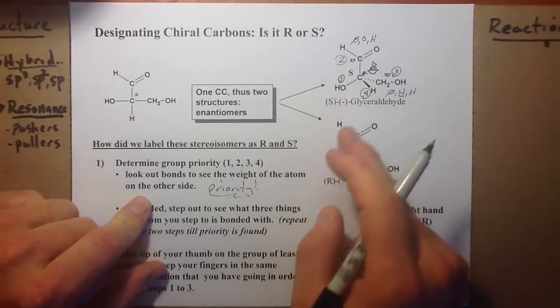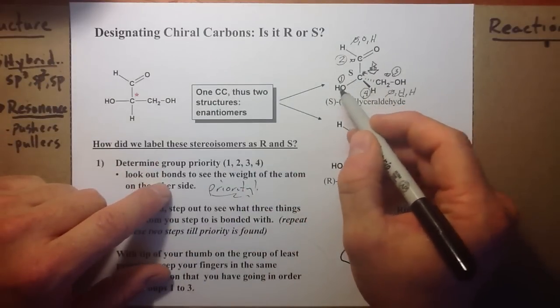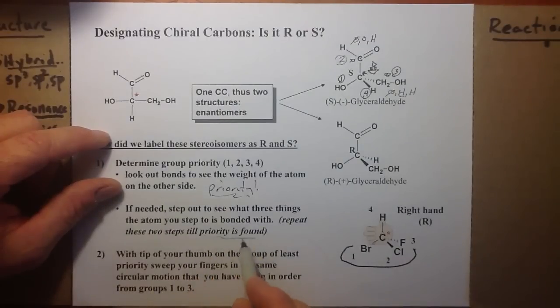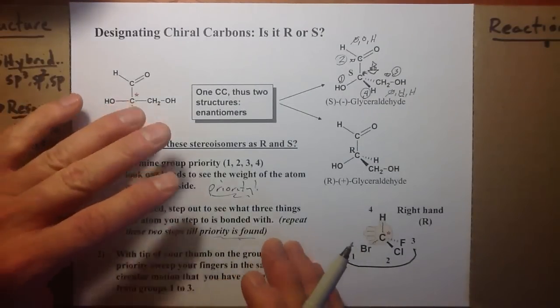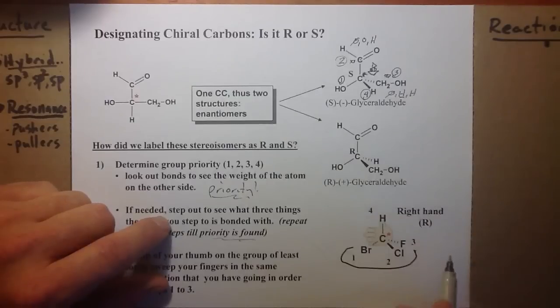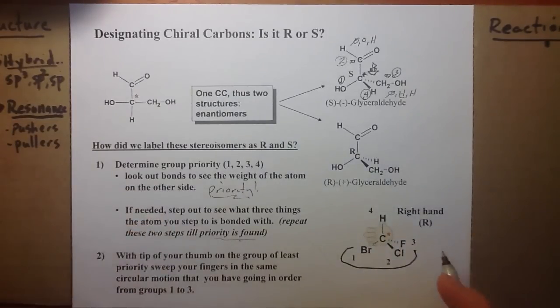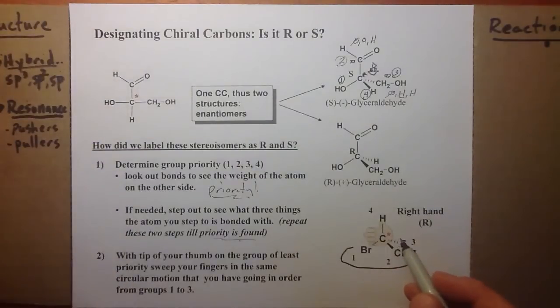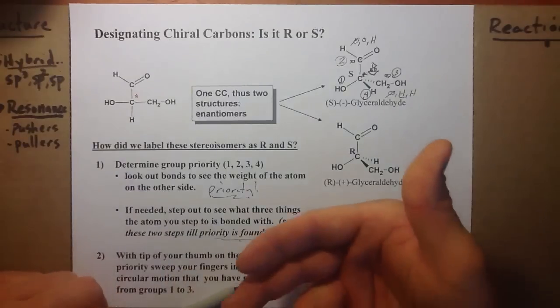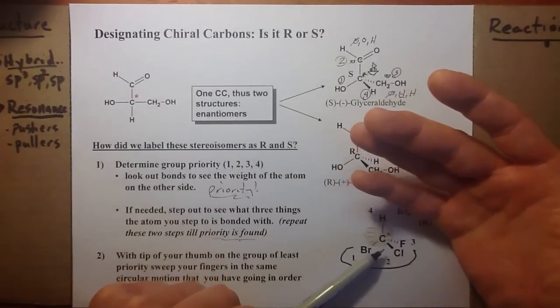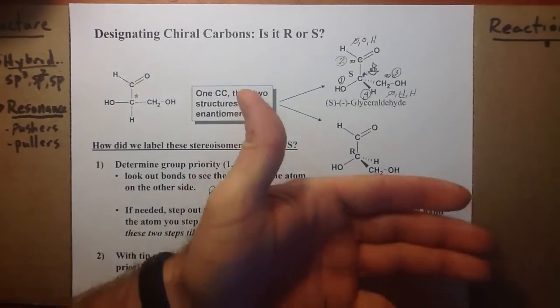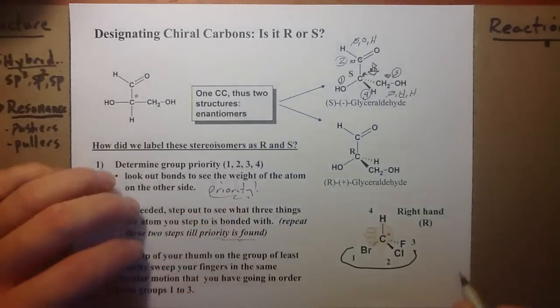Of course, you can try this with R plus glyceraldehyde. My left hand would no longer work because I'm rolling one to three to two. Here's another structure showing priority that could have been determined just by looking out from this carbon. Bromine's number one, it's the biggest nuclei. Chlorine's number two, then fluorine, then hydrogen. In this case, the thumb would be pointed straight up because that's where the hydrogen is. You wrap your palm around the carbon, the asymmetric center. That would take my right hand, so this would be an R configuration.